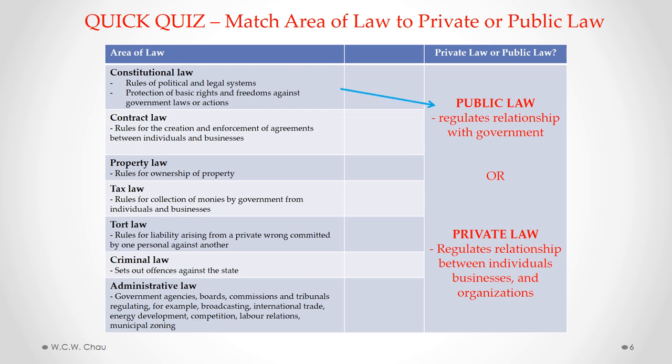Constitutional law is considered to be public law. These are the rules that set up our political and legal system and also protect our basic rights and freedoms against government laws or actions — in Canada, we call this the Charter of Rights and Freedoms. Since those rules regulate our relationship with government, it is public law. Contract law is considered to be private law — these are the rules that govern the creation and enforcement of agreements between individuals and businesses, regulating the relationship between individuals, businesses, and organizations.